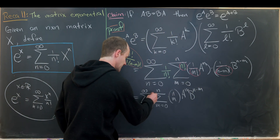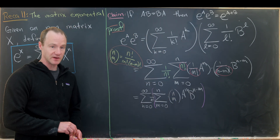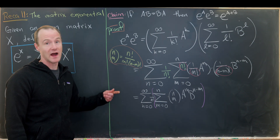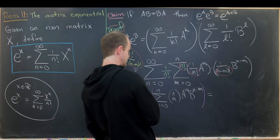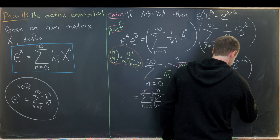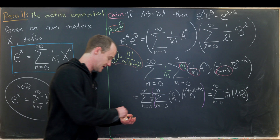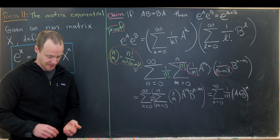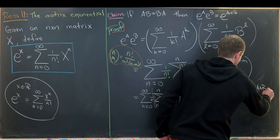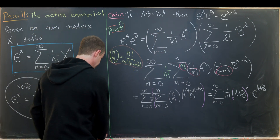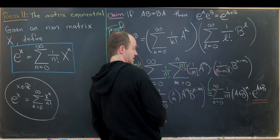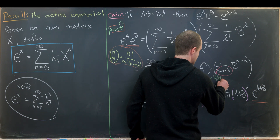If we look at this inner sum, it looks like a binomial expansion. But this is only a binomial expansion when AB equals BA. So this becomes the sum as n goes from zero to infinity of one over n factorial times (A plus B) to the n, where (A plus B) to the n expands to that purple expression when AB equals BA. And that is exactly e to the A plus B. So we've started with e to the A times e to the B and ended with e to the A plus B, using the fact that AB equals BA.